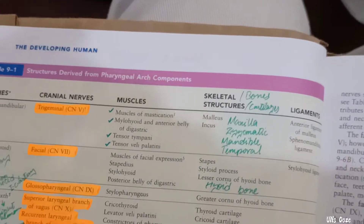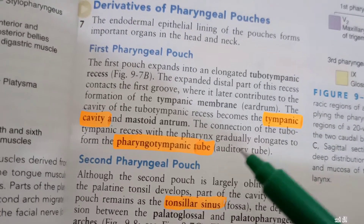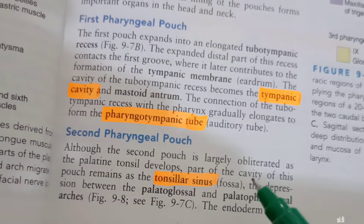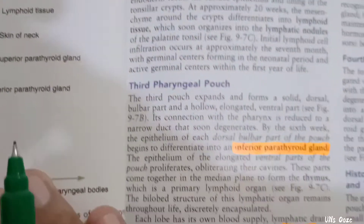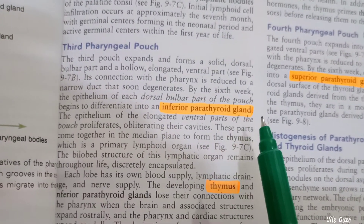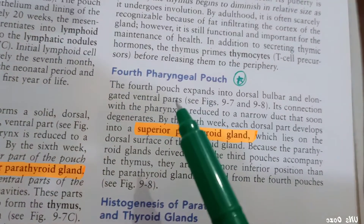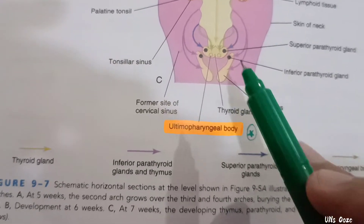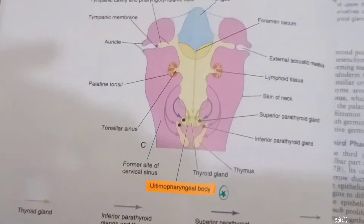Now for the pharyngeal pouches: the first pharyngeal pouch gives rise to the middle ear cavity and auditory tube. The third pharyngeal pouch gives rise to the parathyroid gland and thymus. The fourth pouch expands into a dorsal bulbar and elongated ventral part, giving rise to the ultimopharyngeal body.